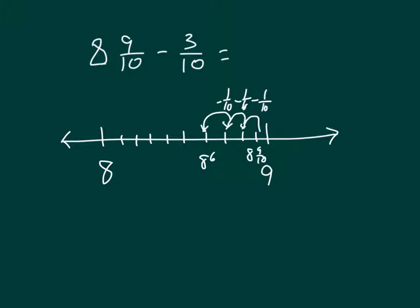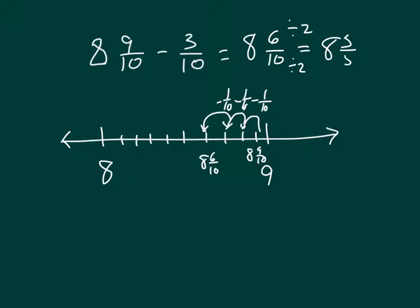We'll mark 8 and 6/10ths on our number line. That's 9/10ths minus 3/10ths equals 6/10ths, and then we have the whole number 8. If we were to write that in simplest form, we would get 8 and 3/5ths.